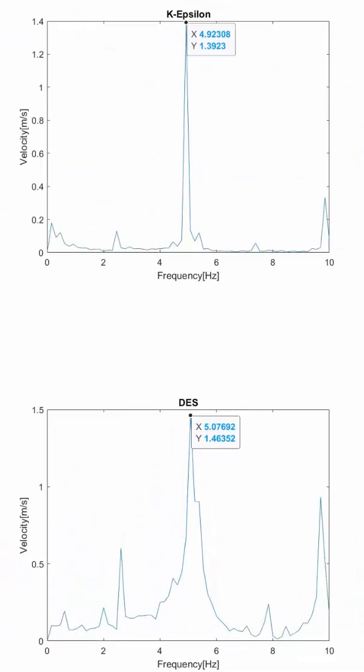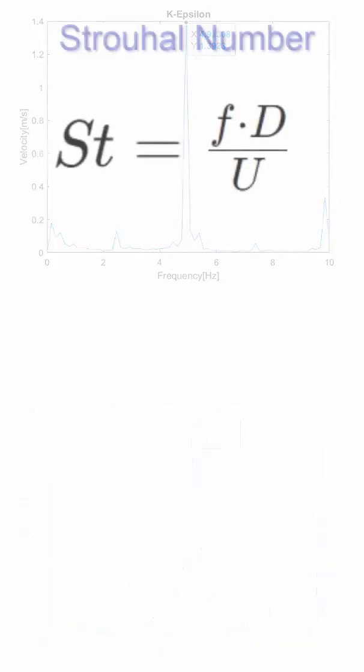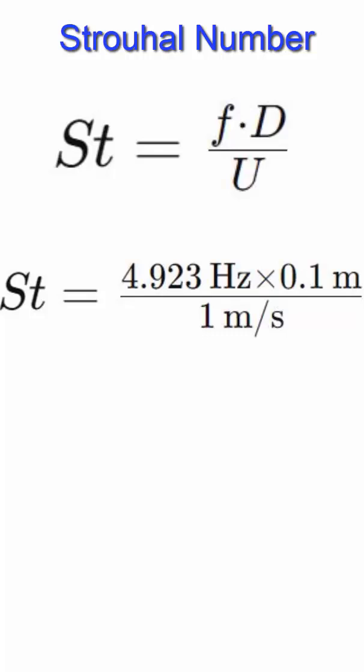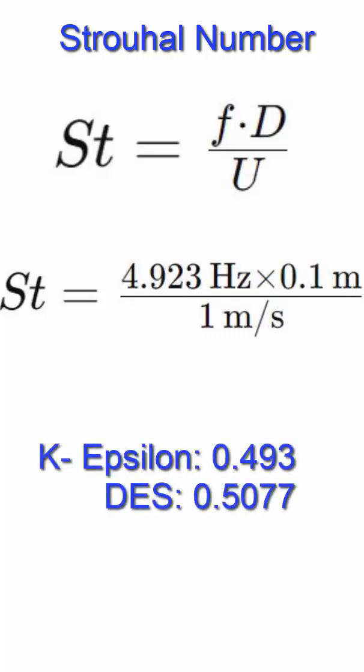The objective is to find the frequency of vortex shedding and the corresponding Strouhal number. The Strouhal number is also almost the same since it is a function of the frequency of vortex shedding, not the magnitude of the vortex.